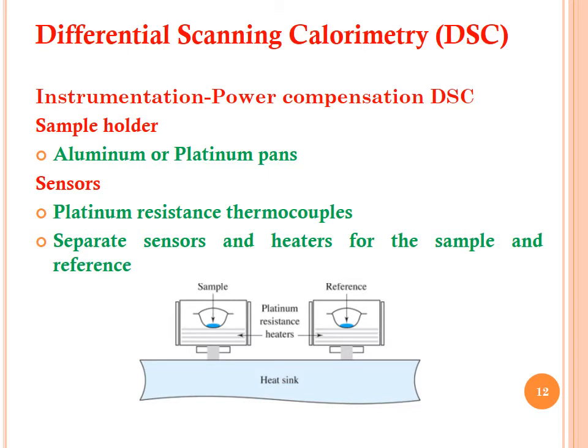The other type is power compensated DSC, which is simpler equipment compared to heat flux DSC. The sample holder uses aluminum or platinum pans — one for the sample and one for the reference. The sensor is a platinum resistance thermocouple, with separate sensors for the sample and reference. The sample and reference pans are placed on a heat sink, which is a passive heat exchanger that transfers heat generated by an electronic device.